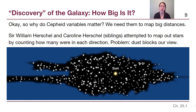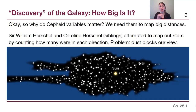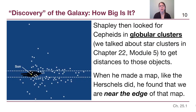There is interstellar dust that is blocking that light, so this initial map makes it look like we are the center of this structure — but it's very limited and biased towards what we're able to see from our location. If you're in the middle of a very dense forest, you can count trees in each direction and they might seem roughly the same in every direction, but that doesn't mean you're at the center of the forest. Cepheid variables became the key in allowing us to make a more accurate map.